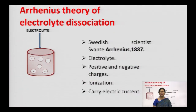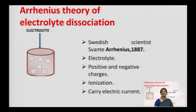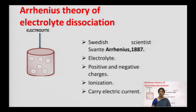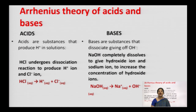The first theory is the Arrhenius theory of electrolyte dissociation. Dissociation means breaking into parts. This theory was given by the Swedish scientist Arrhenius in 1887. He said that whenever an electrolyte is dispersed in any medium or solvent, it dissociates — meaning it breaks into positive and negative charges. This process is called ionization, and the ions formed carry electric current. This process takes place only when there is a medium or solvent; it does not take place in solids.